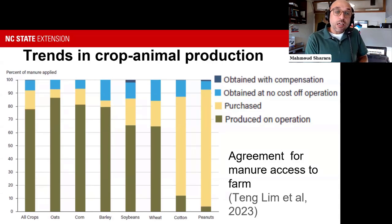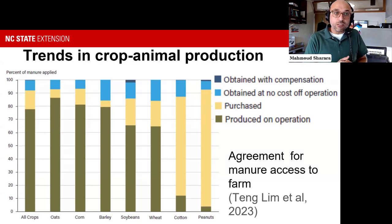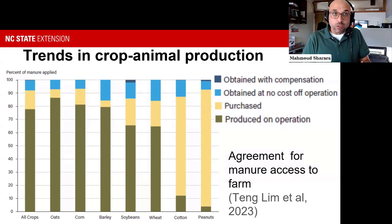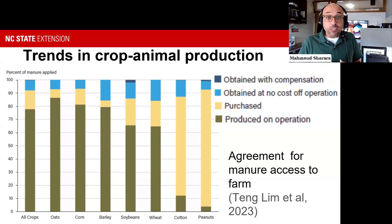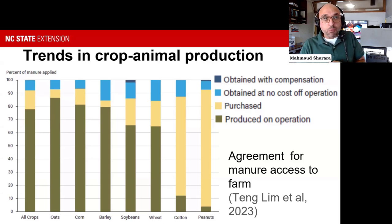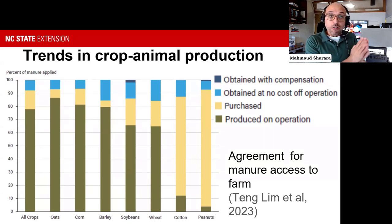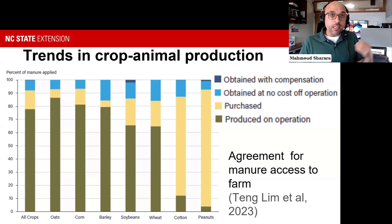Another figure helps us understand how cropland receives manure. The vertical axis shows the percentage of manure applied on crops, and the horizontal axis shows the source. The darkest color at the bottom represents manure produced on the facility itself. It could also be purchased—represented by light yellow—or obtained from a source at no cost, essentially for free, in light blue. The darker blue indicates some compensation was associated with accessing the manure.